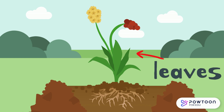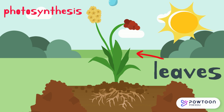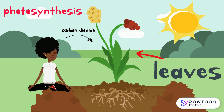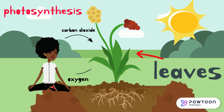Leaves. The leaves are where the magic happens. They are responsible for making food for the plant through the process called photosynthesis. During photosynthesis, the plant takes in sunlight, water and carbon dioxide from the air and turns it into energy. It also releases oxygen that we breathe. It's like the plant's own little factory.